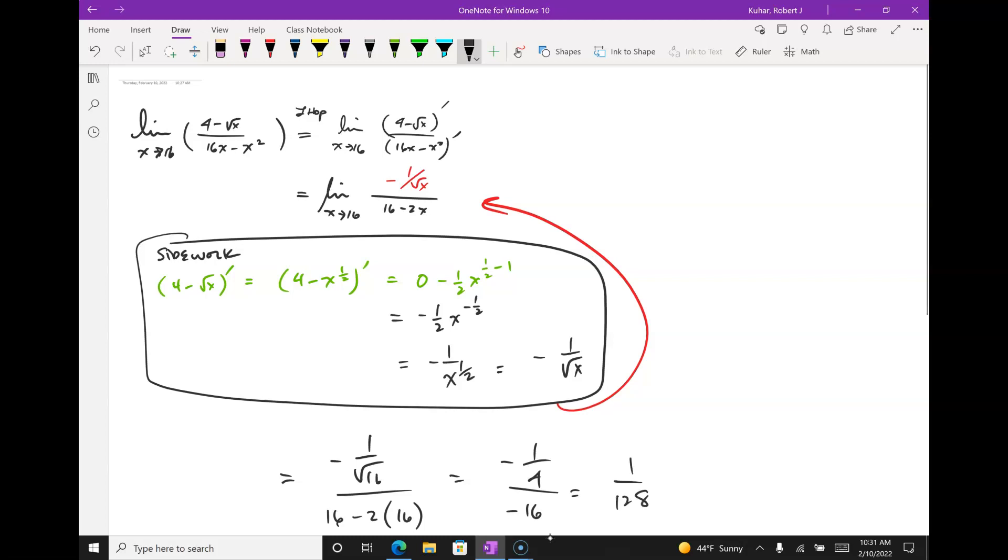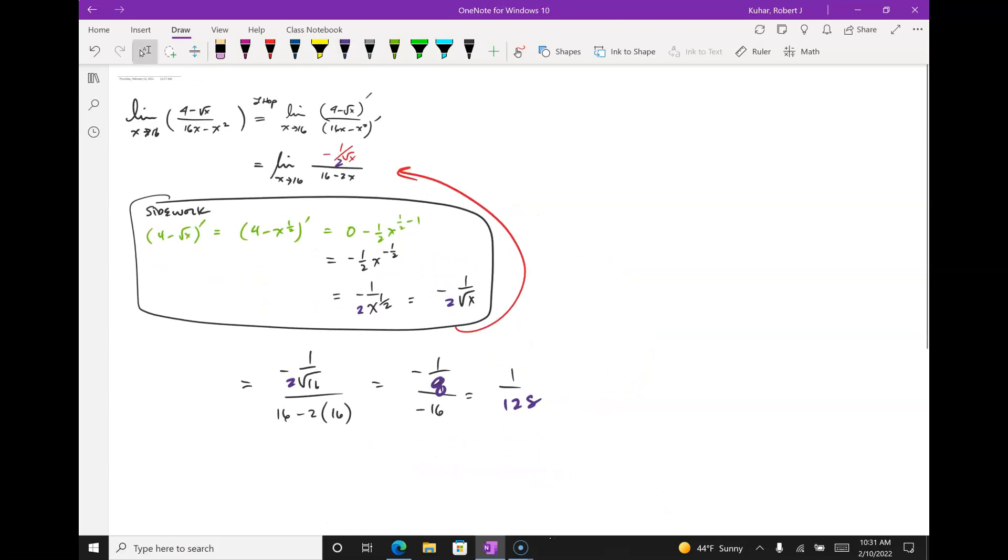So, it's positive 1 over 128. What did I miss? Oh, I missed my 2. There's a 2 here. A 2 here. Thank you. 128.